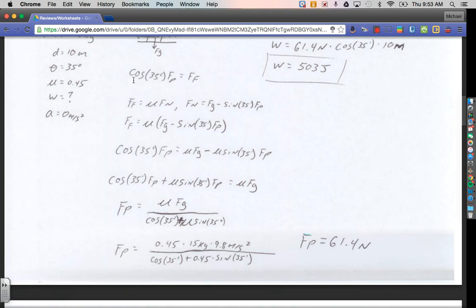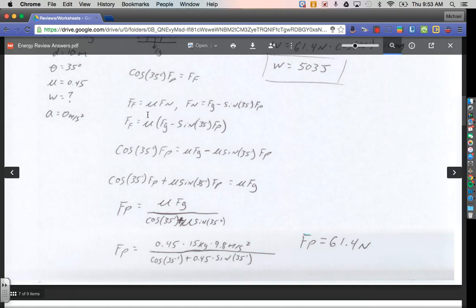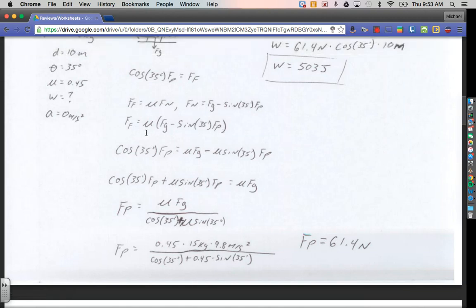Now I'm going to go back up to this equation where I had cosine of 35 degrees force of pull. That's over here on the left side, cosine of 35 degrees force of pull equals the force of friction. What did we just say the force of friction was right here? It was all this stuff. But I'm just going to distribute the mu into both terms. That's why right here I have mu times force of gravity, because mu multiplied by that first term, and then mu multiplied by the second term. So that's why it's minus mu sine of 35 degrees times the force of pull.